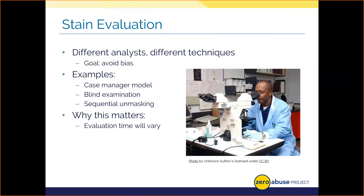There's a spectrum to unmasking information with sequential analysis. You should care about how a scientist evaluates an item because this factor might impact how long it takes to get your results. If they're going in blind with no information versus having an idea of the nature of the case, it could take longer to process case items.